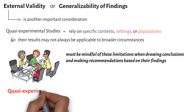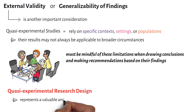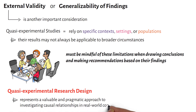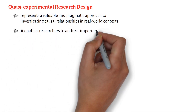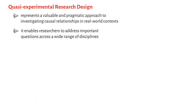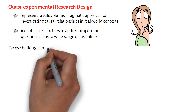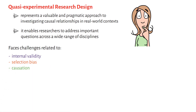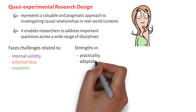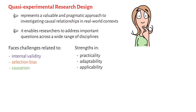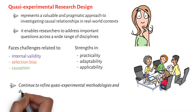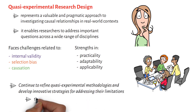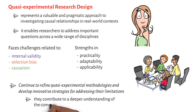In conclusion, quasi-experimental research design represents a valuable and pragmatic approach to investigating causal relationships in real-world contexts. By offering flexibility in situations where randomization is not feasible, it enables researchers to address important questions across a wide range of disciplines. While it faces challenges related to internal validity, selection bias, and causation, its strengths in practicality, adaptability, and applicability make it an indispensable tool in the researcher's arsenal. As researchers continue to refine quasi-experimental methodologies and develop innovative strategies for addressing their limitations, they contribute to a deeper understanding of the complex and dynamic world we inhabit.